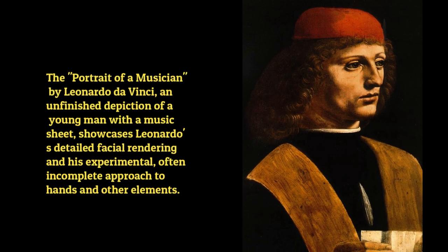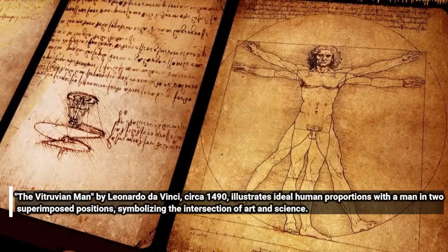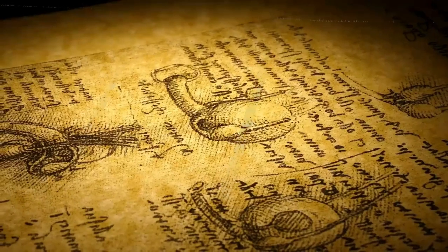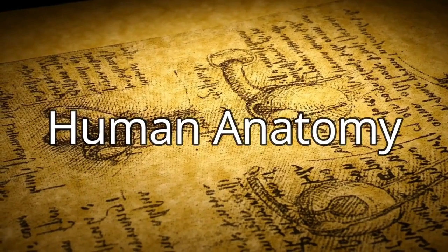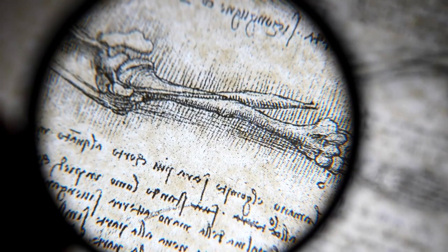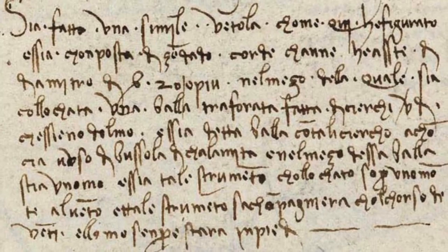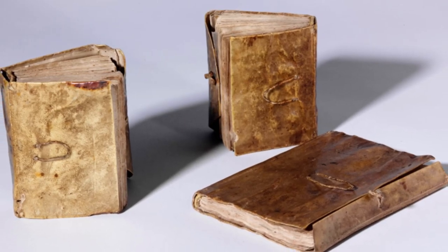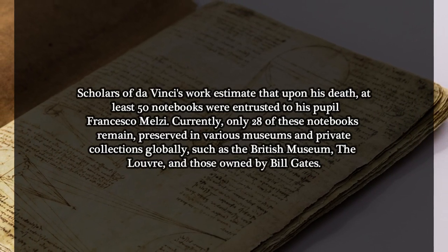Leonardo's wide array of interests, however, meant that he often left many of his artworks and projects unfinished. His notebooks, filled with intricate sketches and visionary ideas, are a testament to his genius, revealing concepts that were centuries ahead of their time. They delved into four main areas: painting, architecture, mechanics, and human anatomy. These notebooks, filled with detailed illustrations and extensive notes — some written in a unique backward mirror script by his left hand — were difficult for others to read. Today, these notebooks, often called da Vinci's manuscripts or codices, are preserved in museums around the world, though they were dispersed after his death.